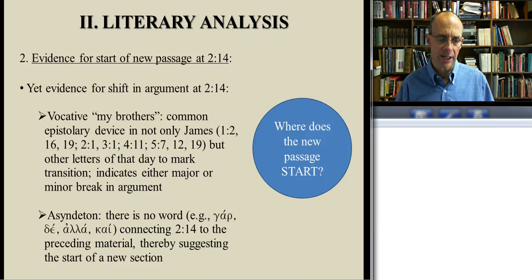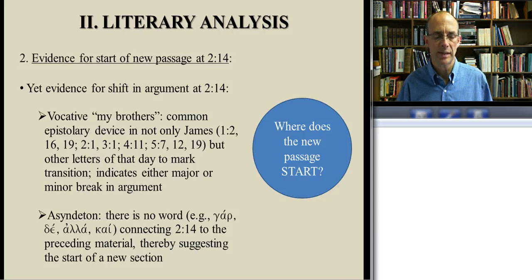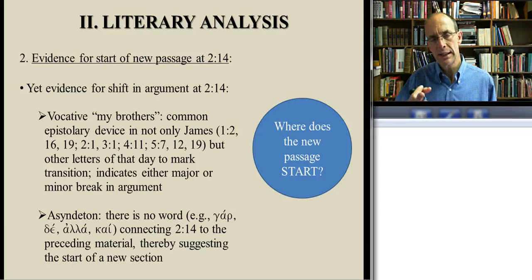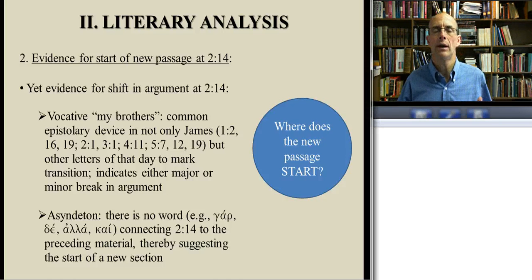Here are the literary clues for the shift at verse 14. The first literary evidence — actually epistolary — is the vocative 'my brothers.' We've seen many examples of how the vocative marks a shift to a major or minor topic in Paul's letters, and this is a wide phenomenon in other biblical writers too. The other clue is what we call asyndeton: there is no little Greek particle or connective word — like gar, de, alla, or kai — showing the connection between verse 14 and the preceding verse. The absence of such a word suggests there is no strong link between verse 14 and verse 13, indicating the beginning of something new.